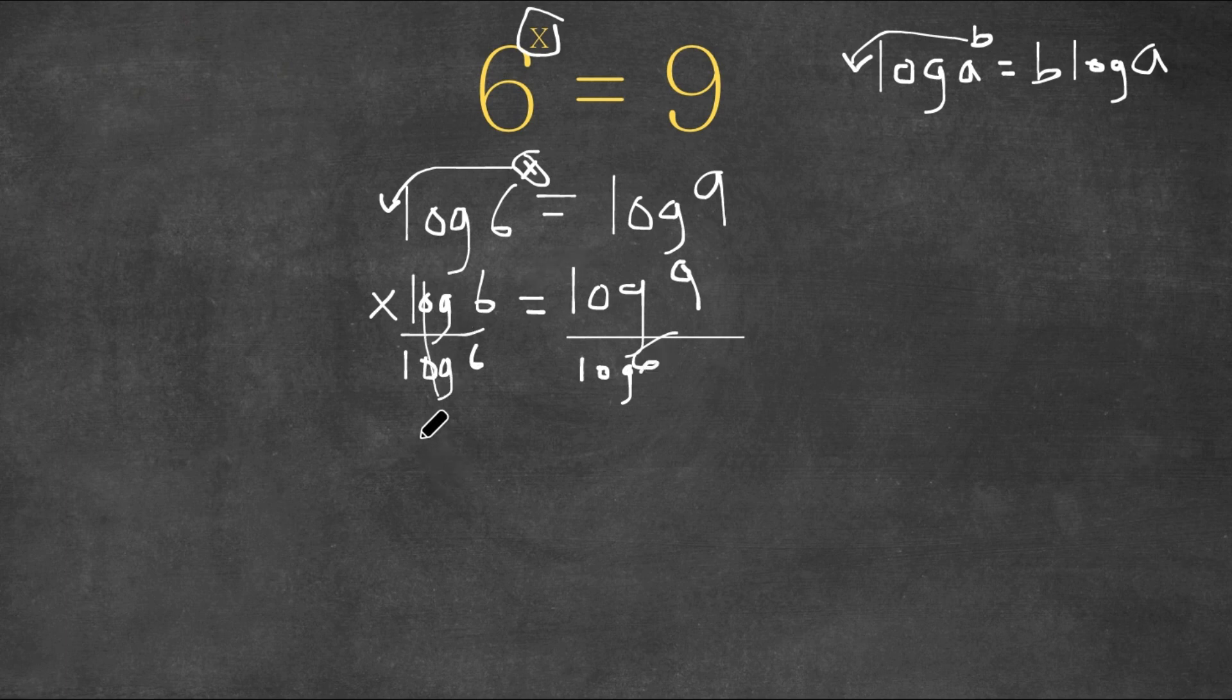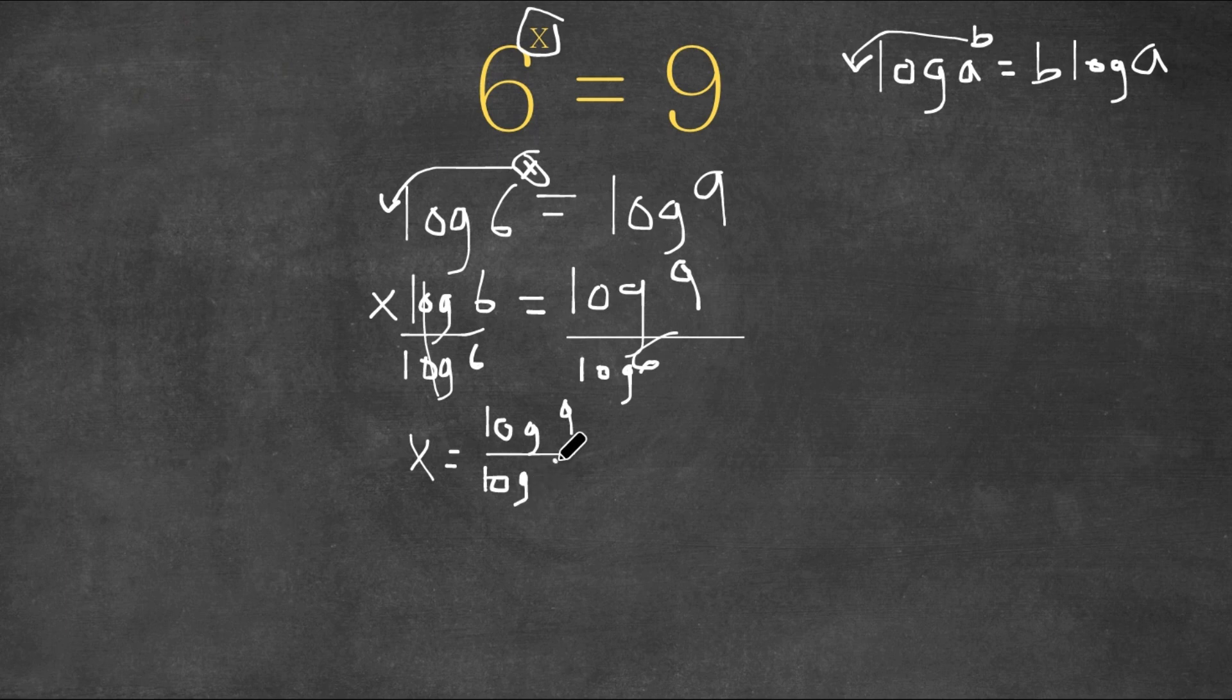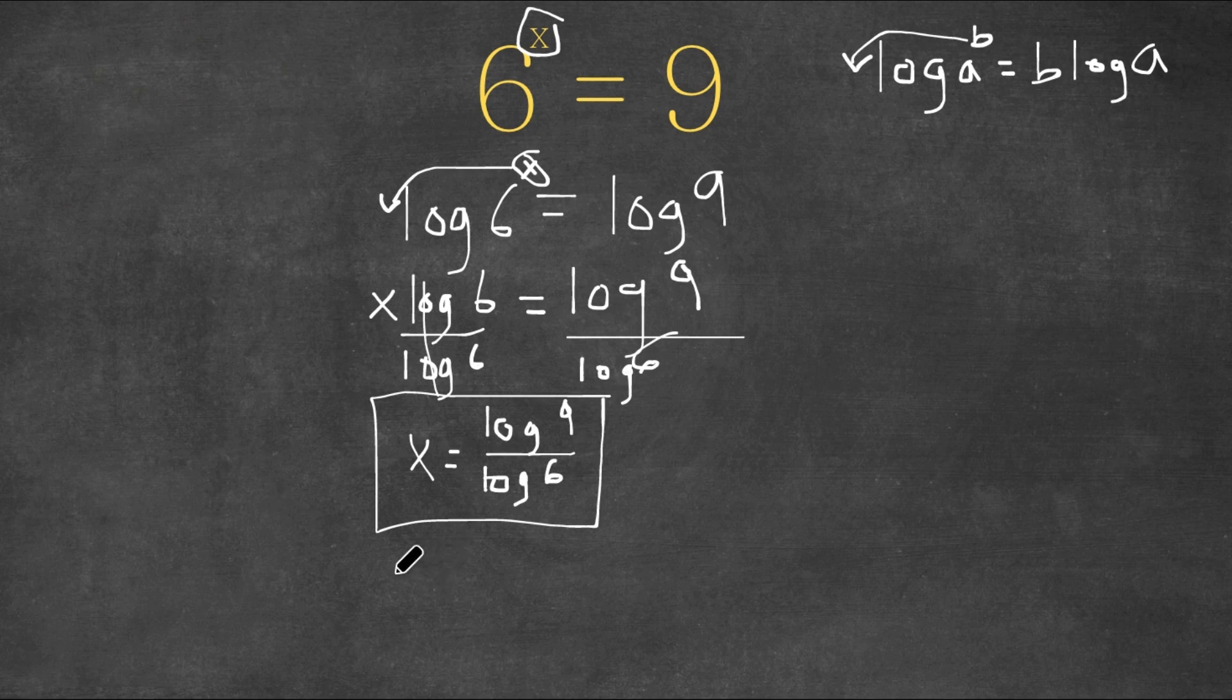These cancel out, so we're left with x equals log 9 over log 6. This is our exact answer. However, we still have to write this as an approximated answer.